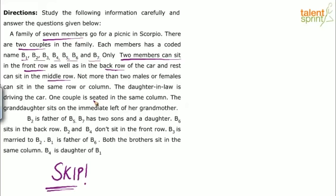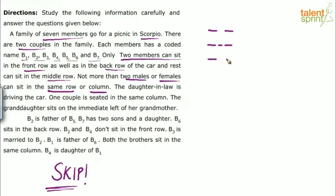We are going to arrange these 7 persons in a Scorpio, so it's not just about rows — we are not arranging them in a straight line. It's a combination of rows and columns. If you try to visualize the top view of the arrangement, there is a driver's seat and a co-passenger seat. Then the middle row will have 3 seats and the back row will have 2 seats. The positions look like the letter H.